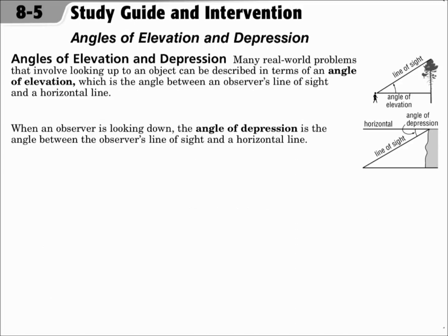When you do story problems that involve angles of elevation or angles of depression, consider the right triangles formed. One measure will be a horizontal measure, another will be vertical, and another will be diagonal. When you put those three together, you get a right triangle, where the horizontal and vertical sides meet at your right angle.